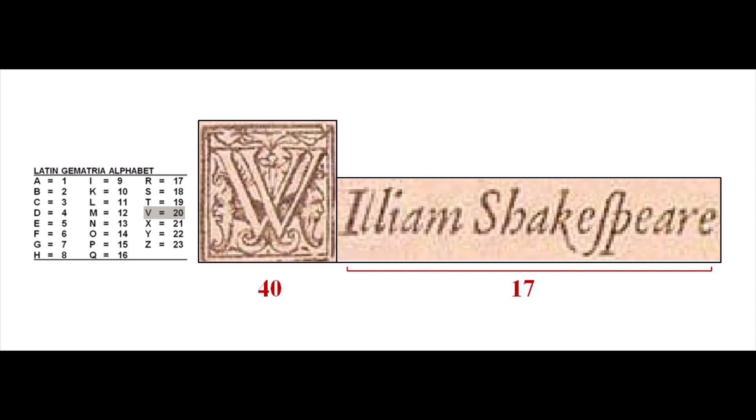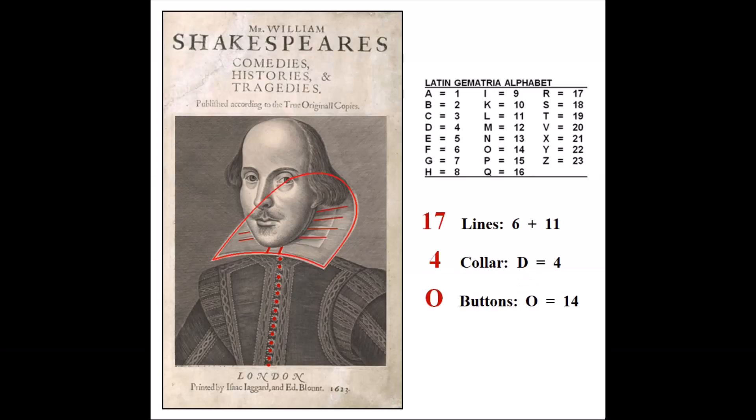A quick reminder: one of the things Waugh explains is how 1740 is part of the name William Shakespeare. The gematria value of the letter V is equal to 20, and a W is comprised of two V's, so a W or two V's is equivalent to 40. Following the W in William, the remaining number of letters in the name — I-L-L-I-A-M S-H-A-K-E-S-P-E-A-R-E — total 17, so the name William Shakespeare is itself encoded with 1740.